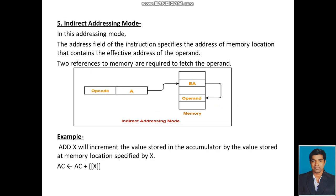For example, 'Add X' will increment the value stored in the accumulator by the value stored at the memory location specified by the address. It is denoted as: Accumulator = Accumulator + [[X]], where the double square brackets represent indirect memory content access.